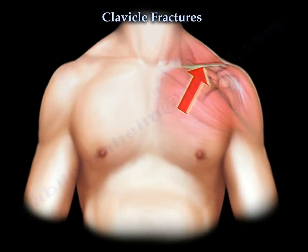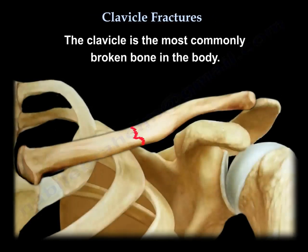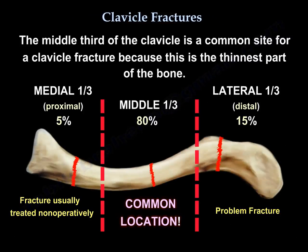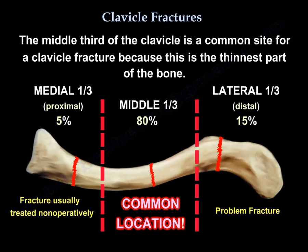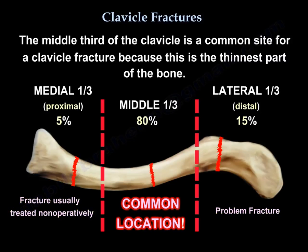Clavicle fractures. The clavicle is the most commonly broken bone in the body. The middle third of the clavicle is a common site for a fracture because it is the thinnest part of the bone. The fracture of the medial third is about 5% and is usually treated non-operatively. The middle third is the most common location for a fracture, and the lateral third is about 15%, which is considered a problem fracture.